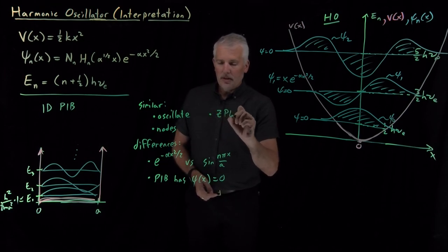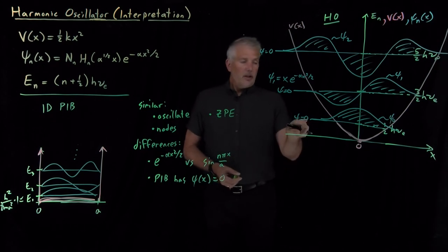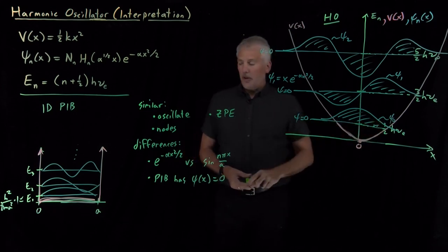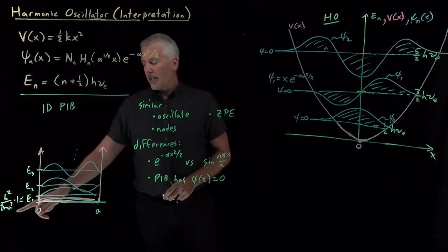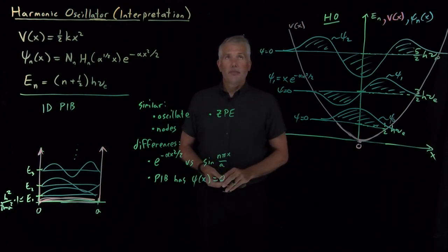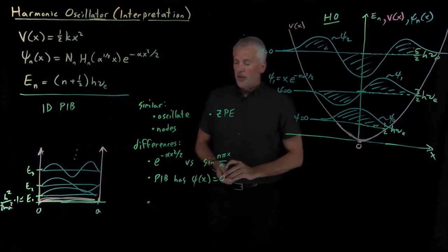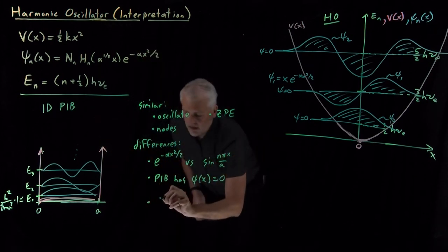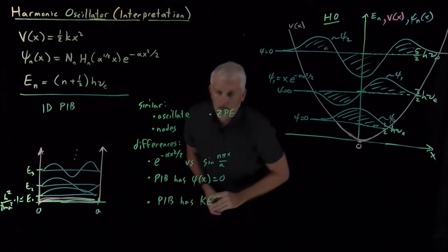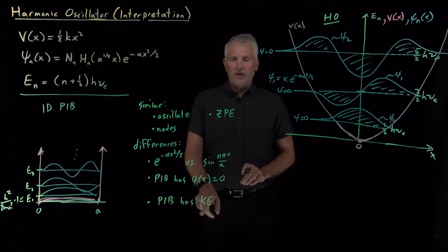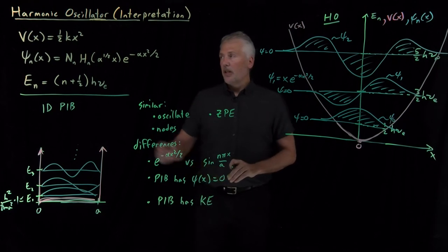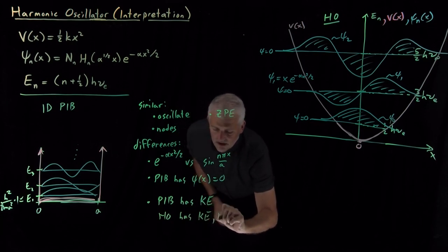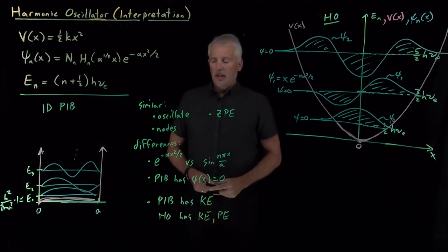A similarity rather than a difference between these two models is that they both have some zero-point energy. The harmonic oscillator has some energy even in the ground state — the energy of 1/2 hν is above zero. The same thing is true for the particle in a box: the E₁ state has an energy larger than zero. Additionally, the particle in a box had zero potential energy, meaning the only energy in that model was kinetic energy. In the harmonic oscillator, we do have some potential energy, so the harmonic oscillator has both kinetic and potential energy. That will be important when we talk about thermodynamic properties.